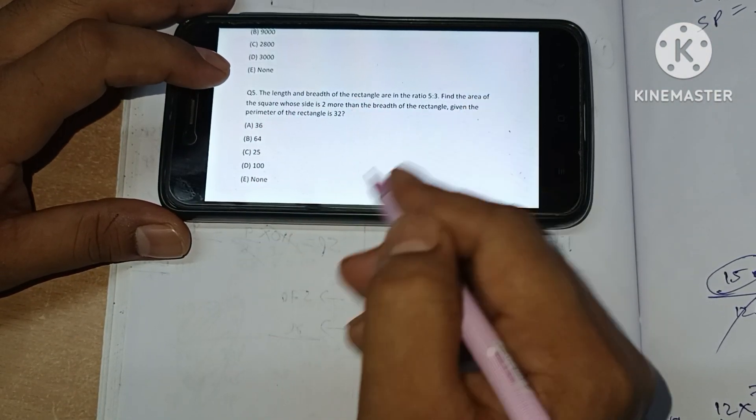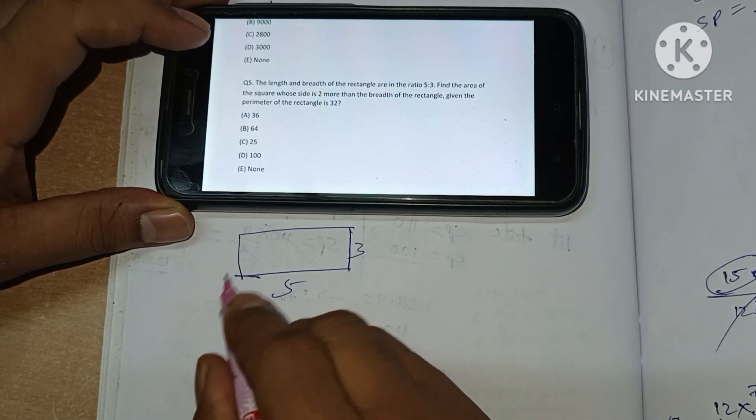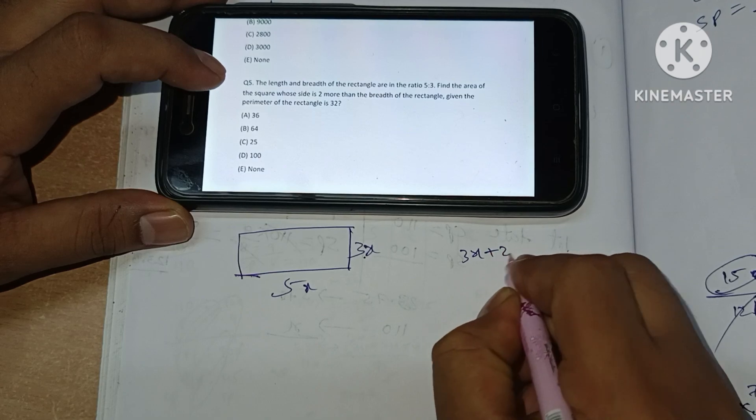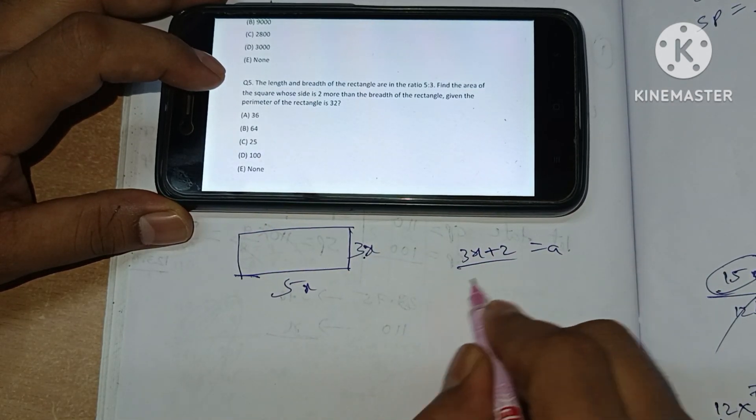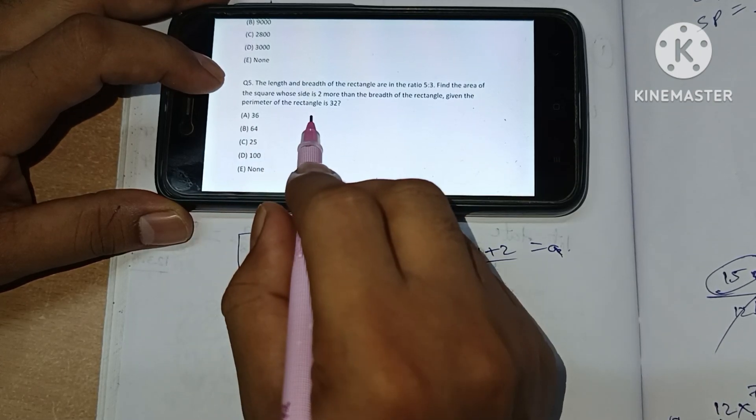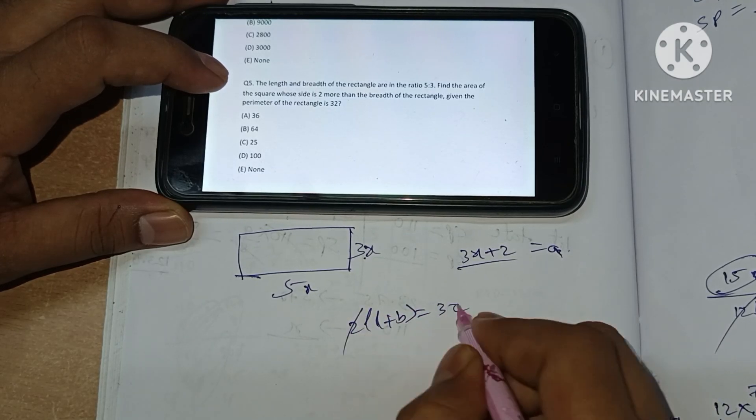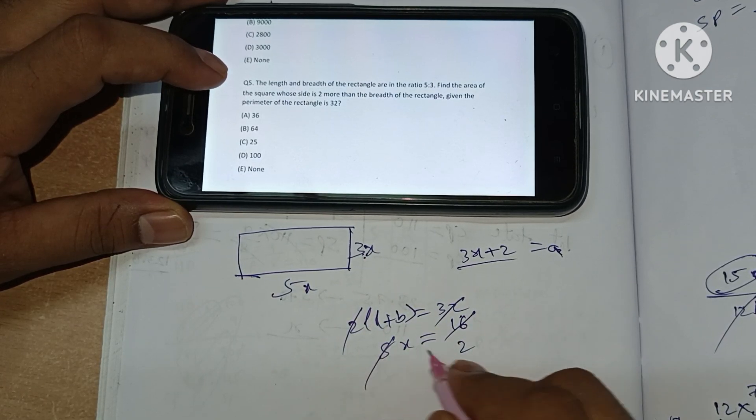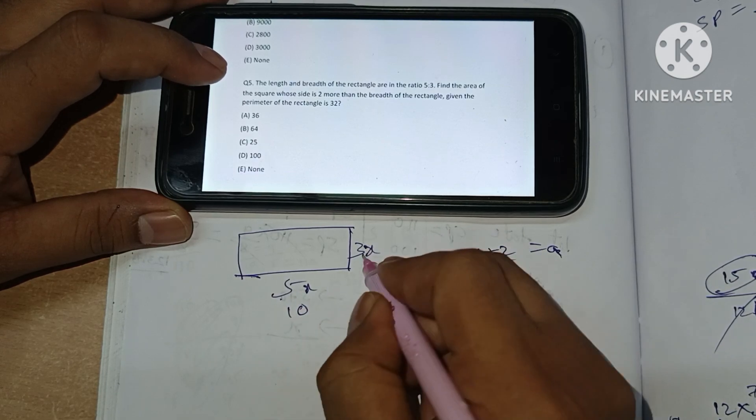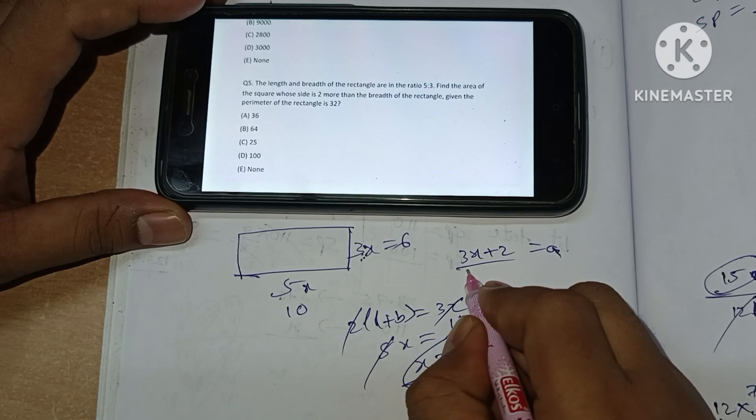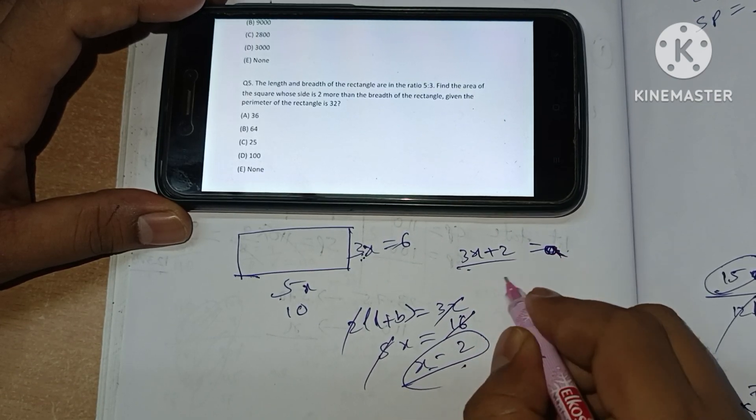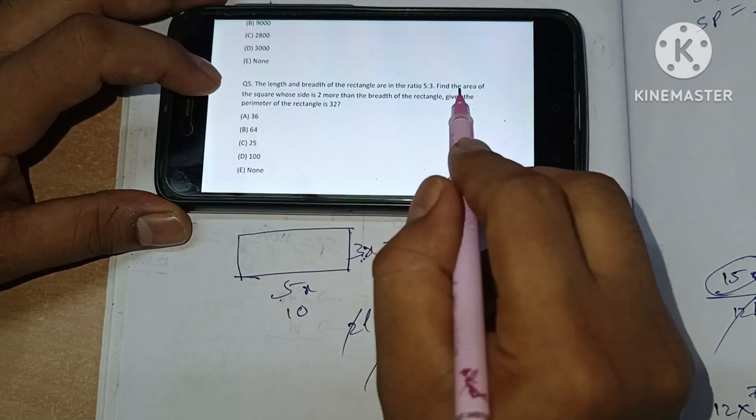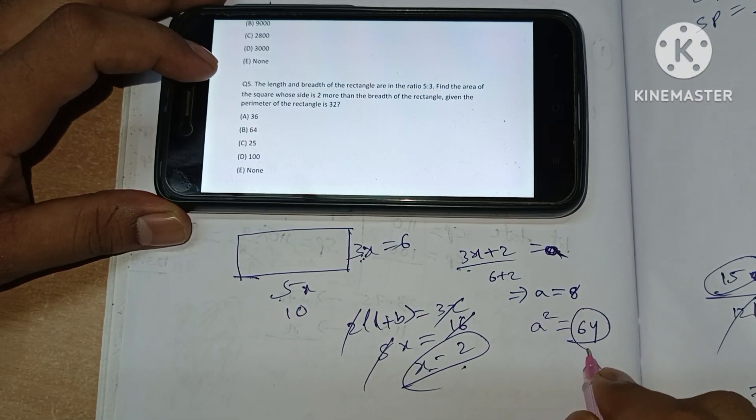Question number 5: The length and breadth of a rectangle are in ratio 5 to 3. Find the area of a square whose side is 2 more than the breadth. The perimeter of the rectangle is 32, so 2 times (length plus breadth) equals 32, giving us length plus breadth equals 16. With 5x plus 3x equals 16, we get x equals 2. So length is 10, breadth is 6. The square's side is 6 plus 2, which is 8. Area of the square is 8 squared, which equals 64. Answer is option B.